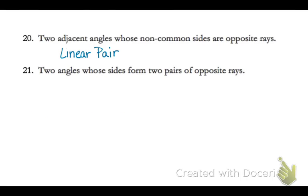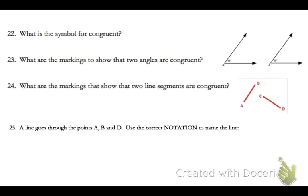On 19, two angles share a common vertex and a side are adjacent. 20, opposite rays are a linear pair. 21, two angles whose sides form opposite rays are vertical angles. The symbol for congruent is the equal sign with the tilde above it. Marking angles congruent has the little arcs in the angle, and marking segments congruent uses tick marks.